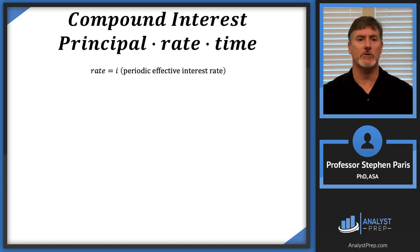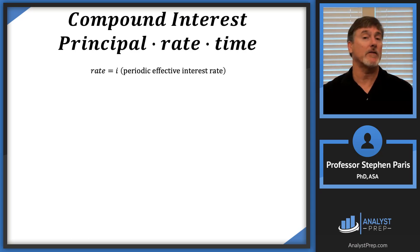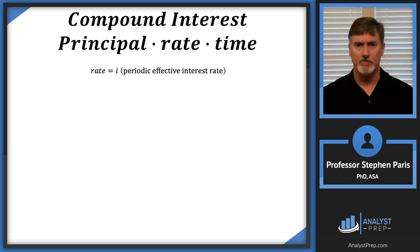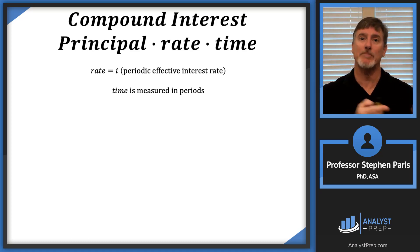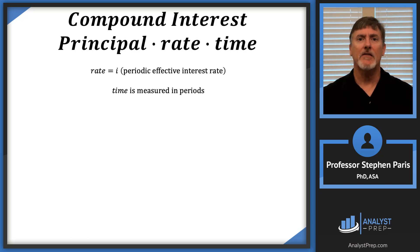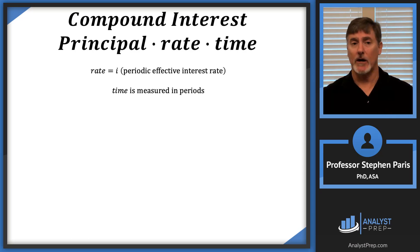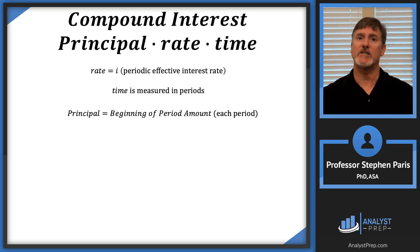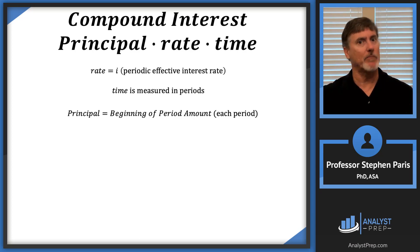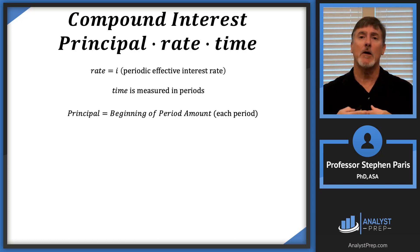Now let's move on to compound interest. Once again I'm going to use I for the rate, but this time instead of being told it's a simple interest rate, you're going to be told it's a periodic effective interest rate. The period does not have to be years — it could be months, quarters, semi-annual periods, or years. Whatever the period is, you measure time in that same period. Here's the key difference from simple interest: the principal is reset each period to be whatever the beginning-of-period amount is, not the original time-zero value.